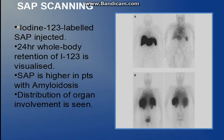The next test is SAP scanning. In this, iodine-123 labeled SAP is injected into the body, and 24-hour retention of iodine-123 is visualized. SAP is higher in patients with amyloidosis. An additional advantage is that we can see the distribution of organ involvement, as seen in the picture — it gets concentrated where the amyloid is present.